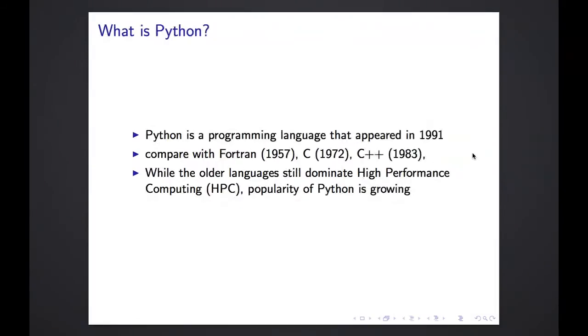So what is Python? Hopefully most of you know, but let me just refresh your memory if you don't. Python is a programming language that appeared in 1991. You can compare its age with Fortran which came in 1957, C which came in 1972 and C++ which came in 1983. So Python is a much newer language and it has some more modern features. While the older languages still dominate high performance computing, the popularity of Python is strongly growing as the number of people attending this talk shows.